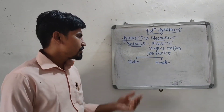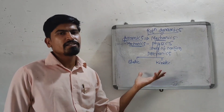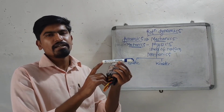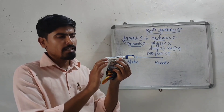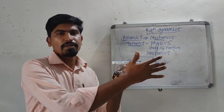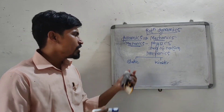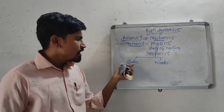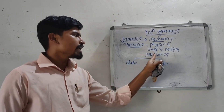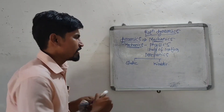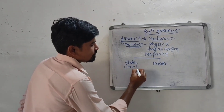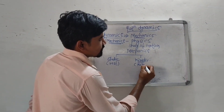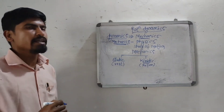In previous years we have studied the difference between rest and motion. Let us consider this pen — at this condition the pen is at rest position. When we apply force on this pen, then the pen moves from one place to another. It means that motion has taken place. So in case of static, we study only the objects that are at rest position. Static is a branch of mechanics that deals with the study of objects that are at rest. And in case of kinetic, we study objects that are in motion.